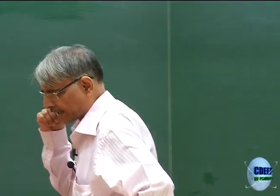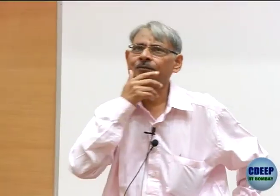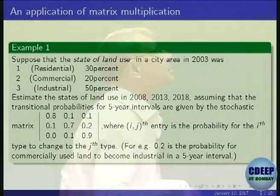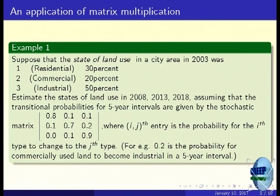Today, before we continue from the previous lecture, I will give an example of an application of matrices which is different from solving linear equations. There is a problem from the tutorial sheet. There is a matrix of transition probabilities given. We are looking at land use in a city area in the year 2003: residential 30%, commercial 20%, industrial 50%.